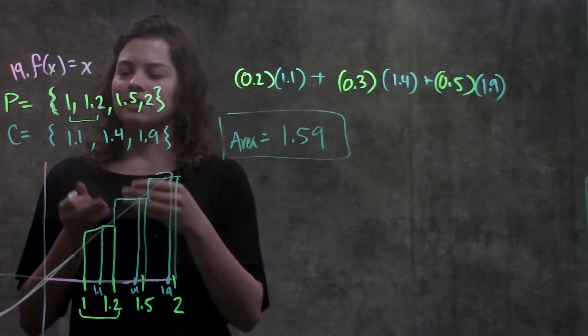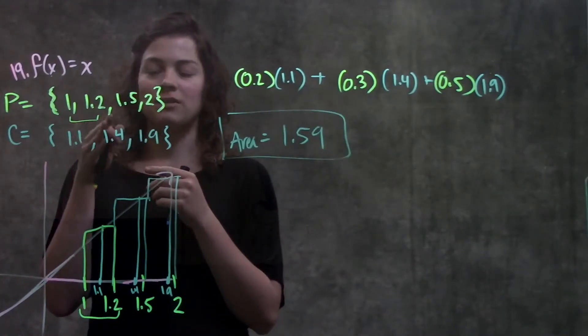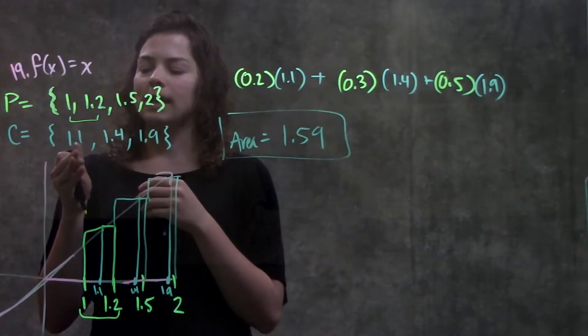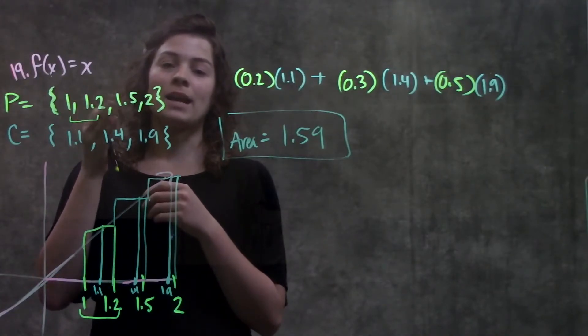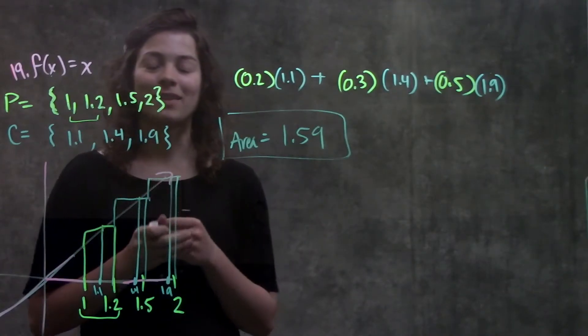The trick here was you just need to determine what all the widths are by subtracting one partition from the next. And then just plug in each height into the function to determine what the height of each rectangle is. Other than that, that's it.